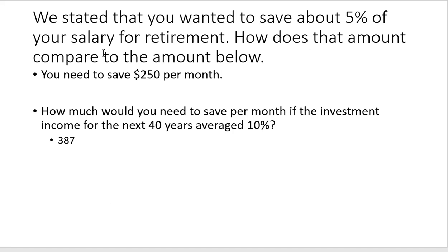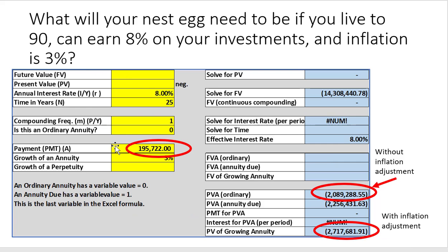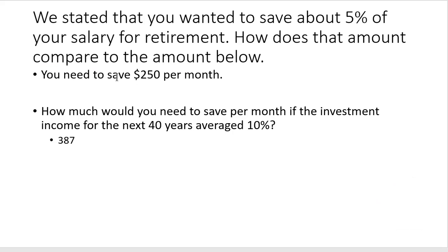We stated that you want to save about 5% of your salary for retirement. How does that amount compare? We said you need to invest $269.59, and 5% of your salary is $250. So just $19 more a month will get you the amount that you need at retirement — just a shade more than 5% is what you need to achieve these goals.